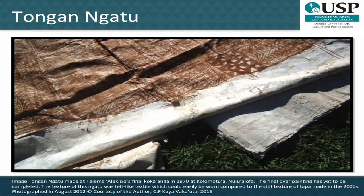Here we see a very old Ngatu, or Tongan tapa, made in 1970 at Telema Alekisio's final Kokaanga at Kolomatua, a village in Nukualofa in Tonga. A Kokaanga refers to the making of Ngatu in the Tongan context. Tongan women form collectives referred to as Kautaha Kokaanga to engage in this group activity of tapa making. While tapa cloth today is coarse to the touch, this particular Ngatu has the texture of felt or velvet and is soft to the touch. It's easy to see how tapa was once used as clothing, curtains and blankets. Designs are imprinted onto the Ngatu using traditional tiles or tablets made from coconut fiber or sennet, which are stitched onto a coconut fiber backing. When stored correctly, these kupesi tablets may be passed down through at least three generations.